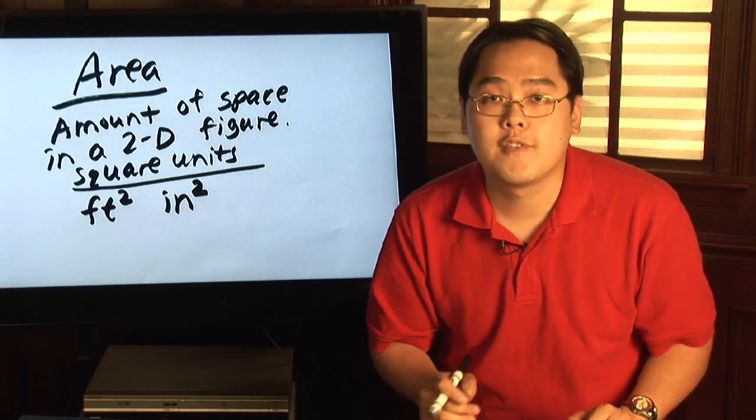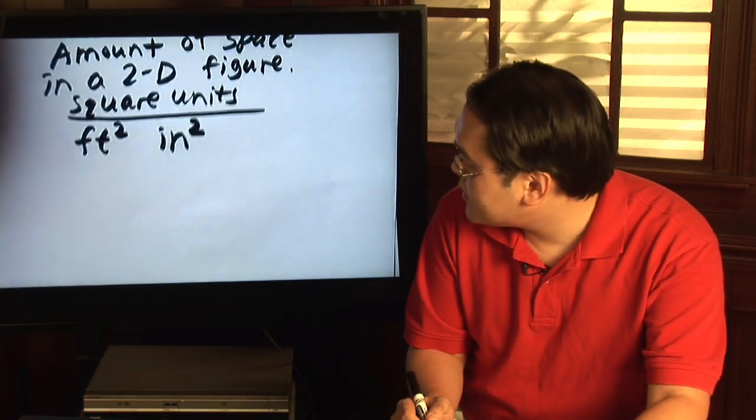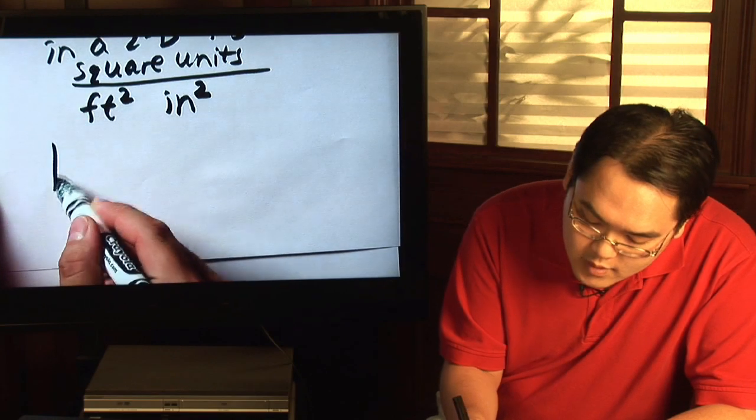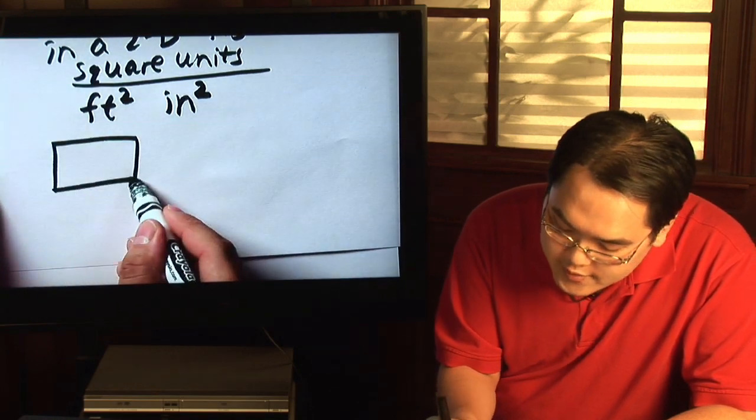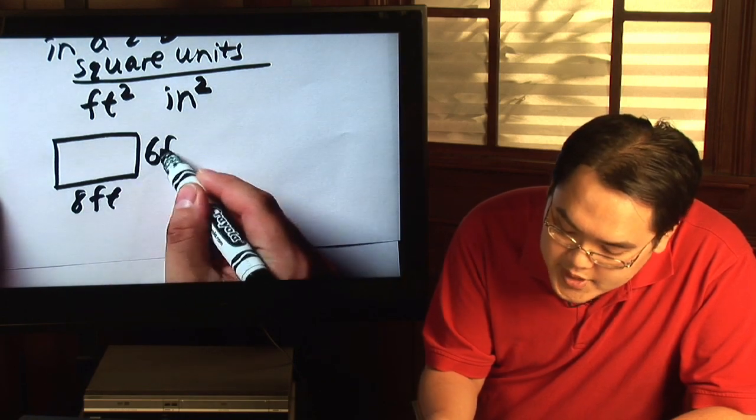Now here's a couple of basic formulas to kind of help you out. For example, suppose you want to find the area of a rectangle. Let's just say it was eight feet by six feet.